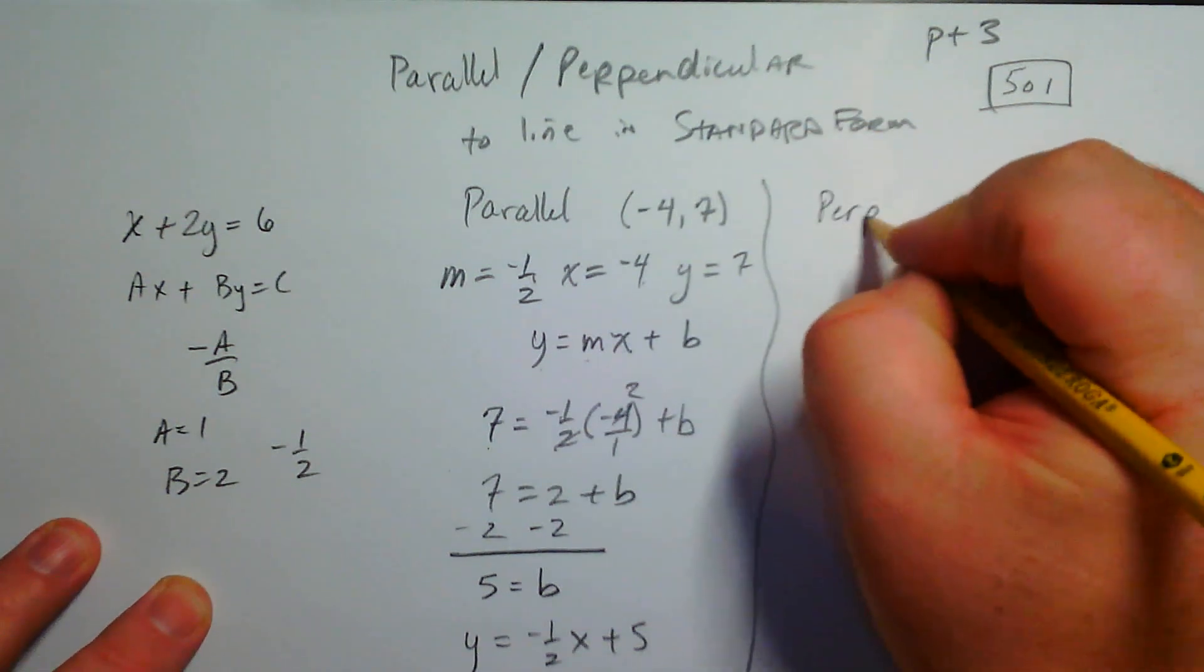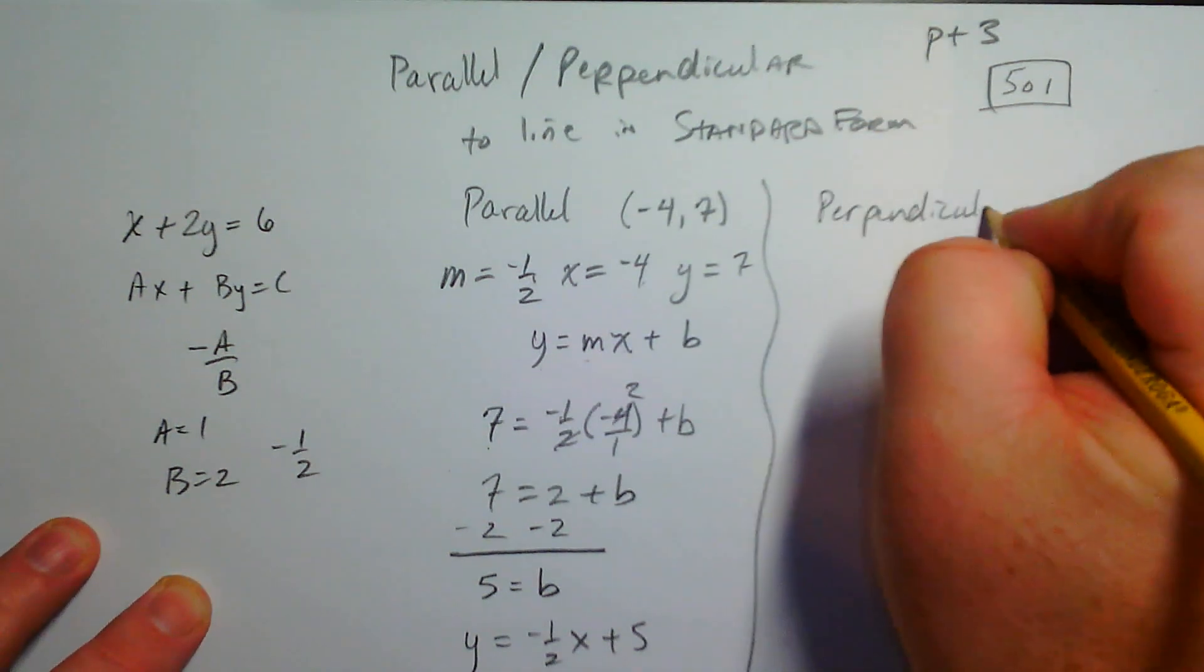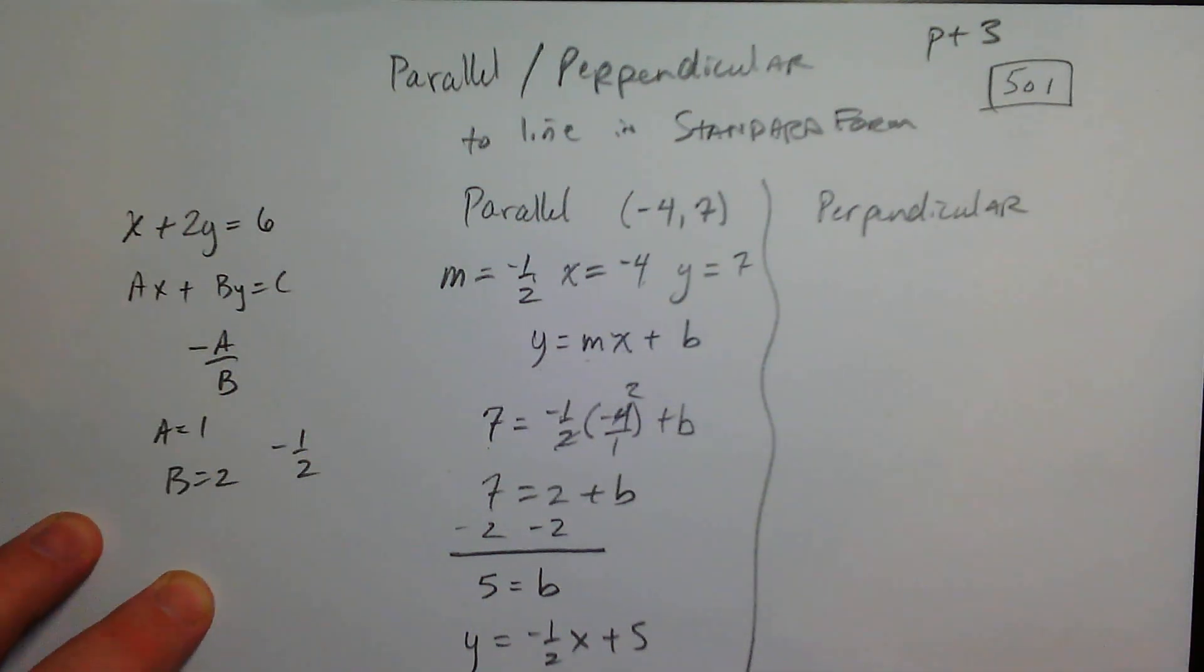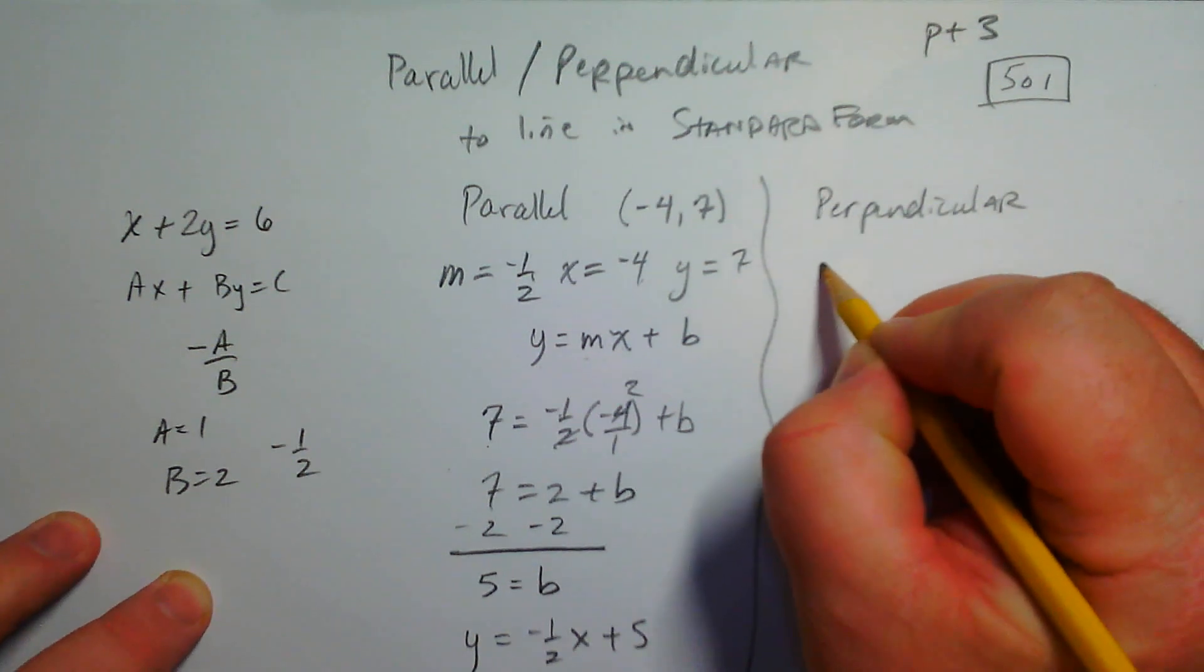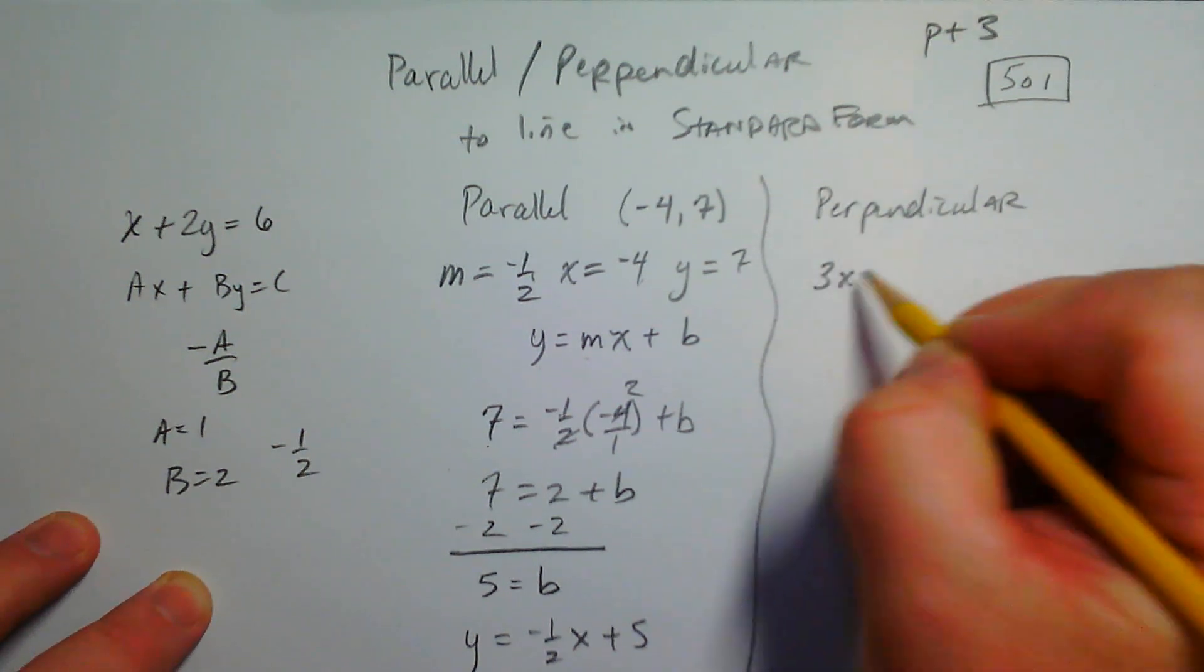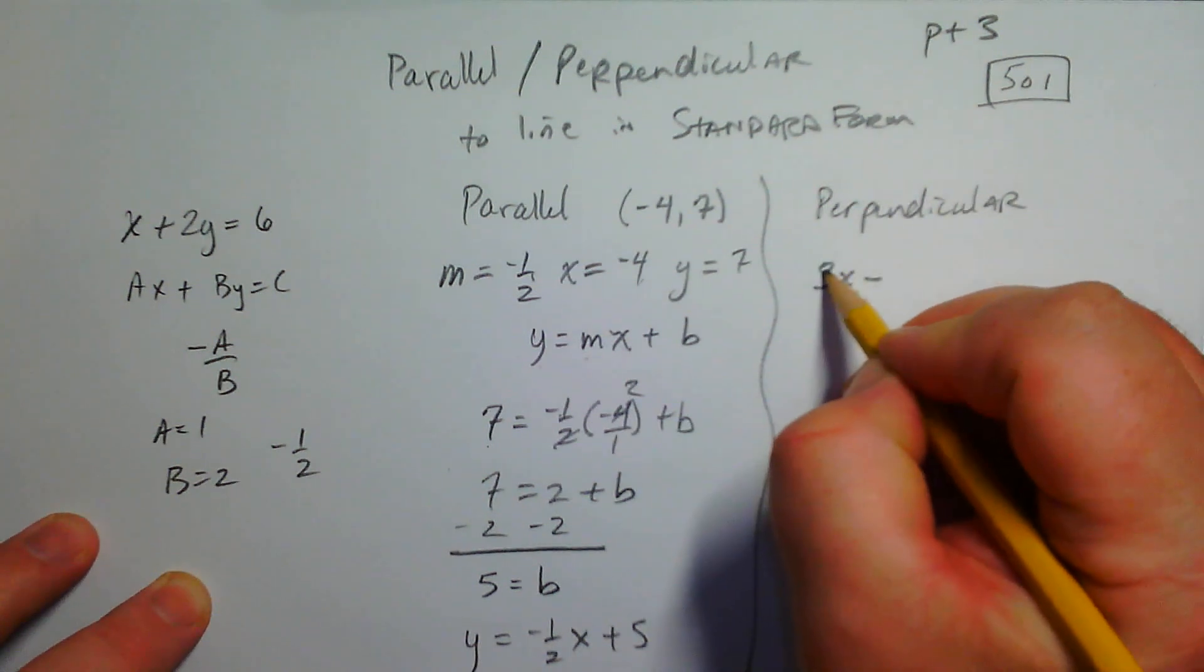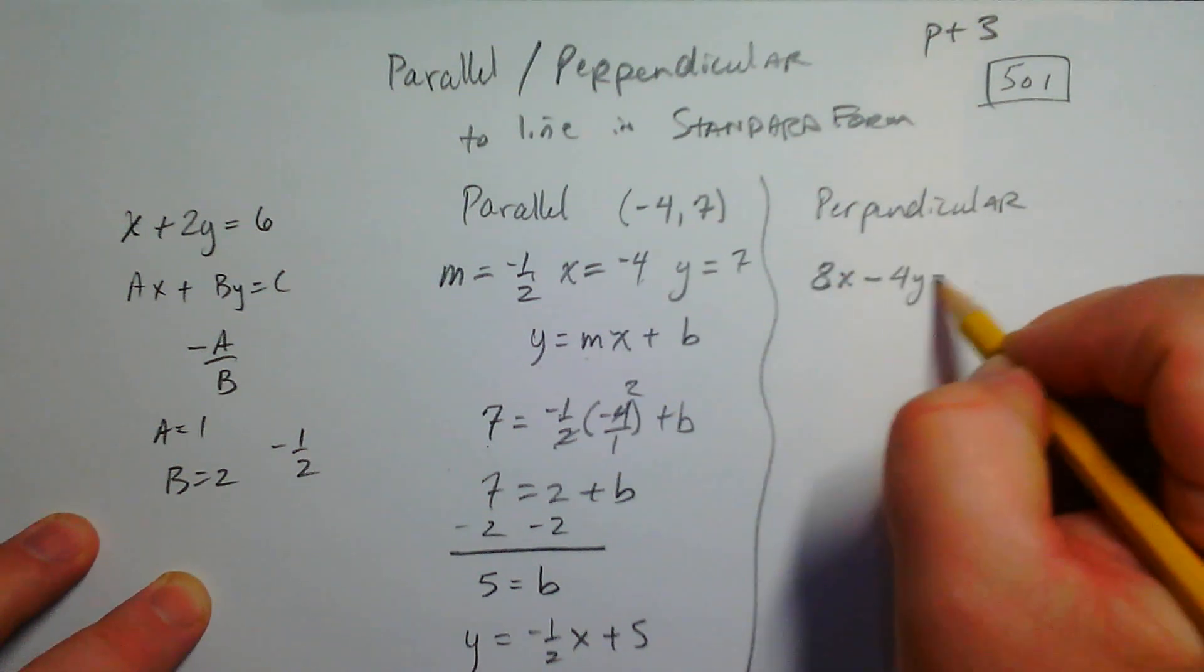Now, perpendicular. I think by now you've probably got the idea, right? The hard part is trying to figure out what is the slope. We already talked about how to do that. So how about we do another one? What if I gave you like 8x minus 4y equals 10.